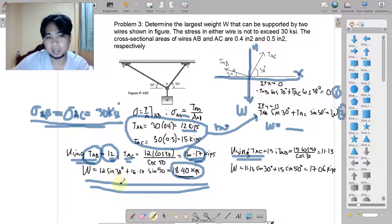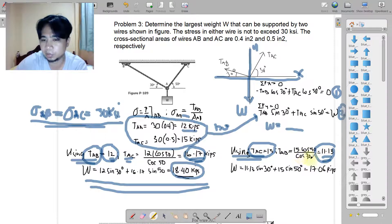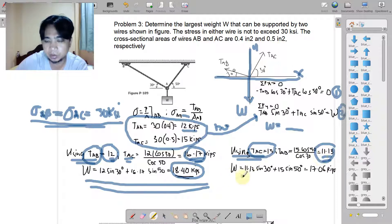Similarly, we do this now using TAC. Using TAC equals 15, we derive now TAB through equation 1 also. By similar procedure, TAB equals 15 cosine 50 divided by cosine 30, we have 11.13 kips. Now if we use TAC 15, then we have TAB of 11.13. These two values now again will be used in equation 2 to derive for W. Substituting these two values, we have a different result - we have 17.16.